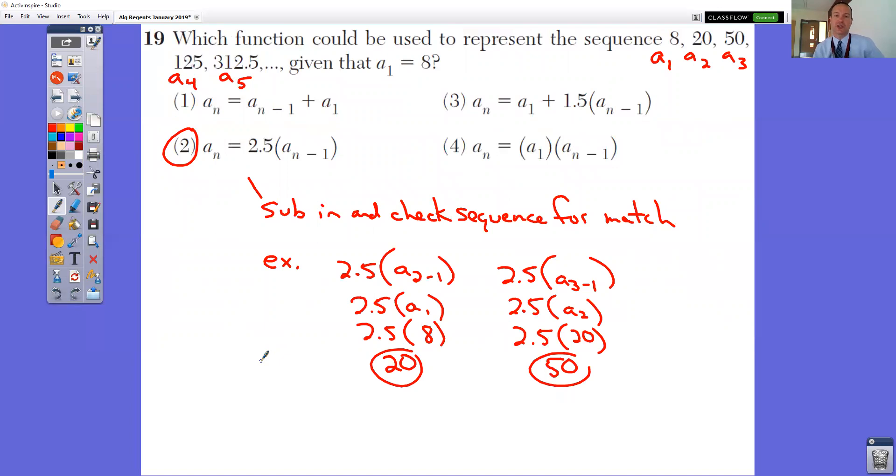In number 19, which function could be used to represent the sequence 8, 20, 50, 125, given that A sub 1 is 8. So this is your A sub 1, A sub 2, A sub 3, 4, 5. Well, what we need to do is sub them in and check. There's no other really way to do it. We just need to take these numbers and sub them in and check to make sure. So we have to take each one of these and sub it in.